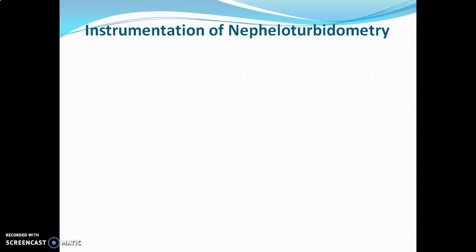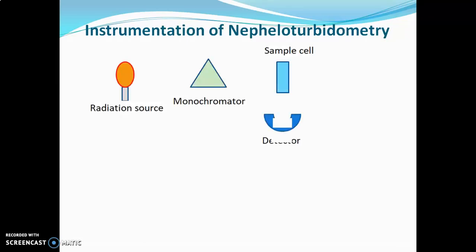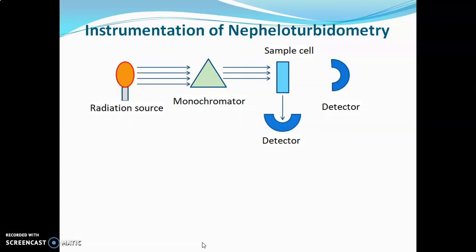Now, for the instrumentation of nephelo-turbidometry — if both techniques are combined, there will be a radiation source, monochromator, sample cell, a detector at 90 degrees to the radiation source, and one more detector at 180 degrees to the radiation source. If two techniques are combined — nephelo and turbidometry — two detectors are placed or one concave detector is placed. Radiation source emits radiations, which pass through the monochromator, then through the sample, where scattering or transmission of light occurs, and these are recorded by the detector.